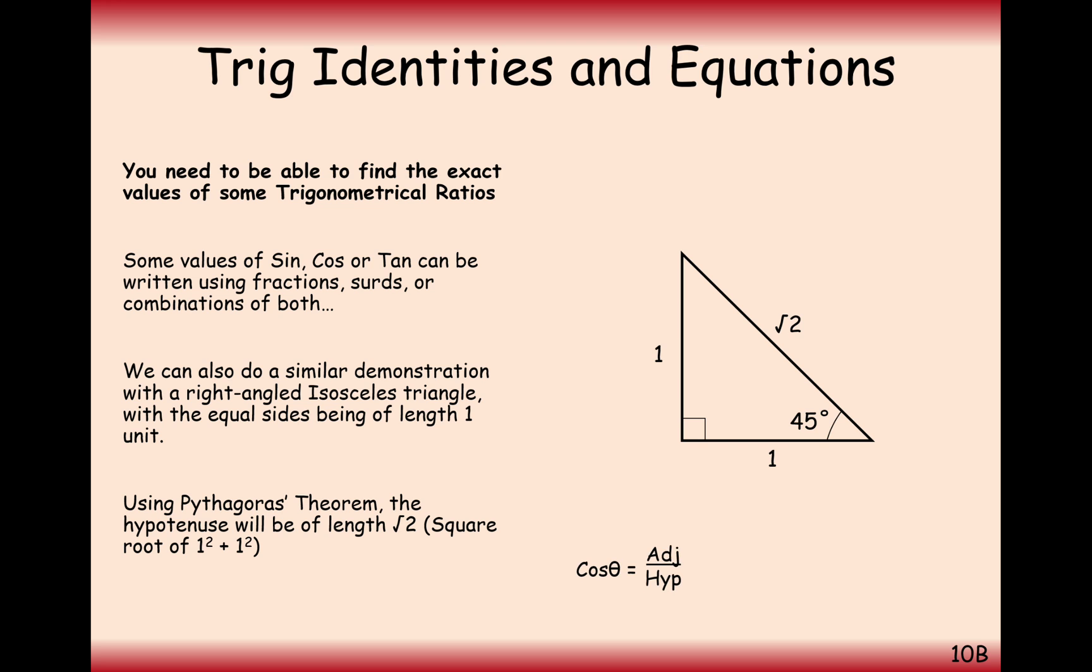For cos, taking this 45 degree angle here, it's going to be adjacent over hypotenuse, which is 1 over root 2. And for tan, it's going to be opposite over adjacent, which is 1 over 1, which equals 1.